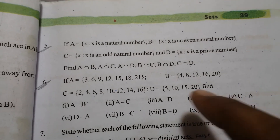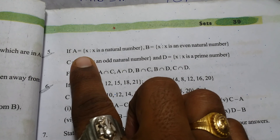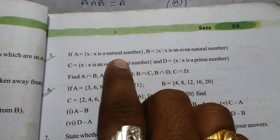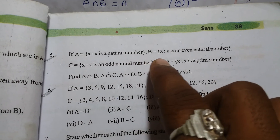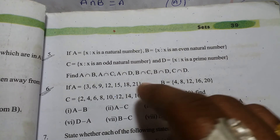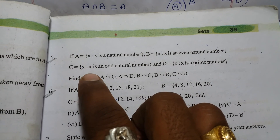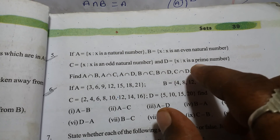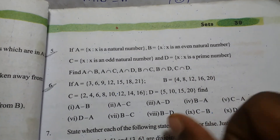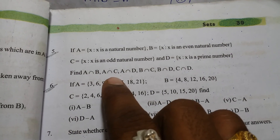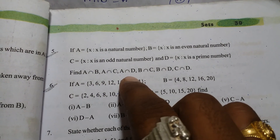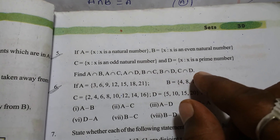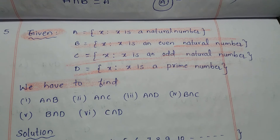This is exercise 2.2 question number 5. Here A is equal to x such that x is a natural number, B is equal to x such that x is an even natural number, C is equal to x such that x is an odd natural number, and D is equal to x such that x is a prime number.